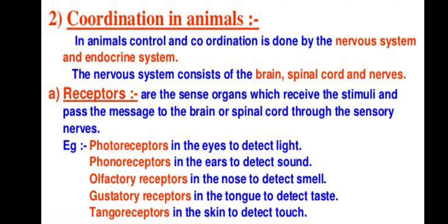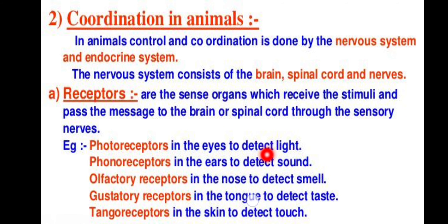Photo means light — so photoreceptors are light receptors, which are obviously located in our eyes. These photoreceptors help us to detect light. Phono means sound — so phonoreceptors are in the ears to detect sound. Olfactory means smell — olfactory receptors are in the nose to detect smell. Gustatory receptors are your taste receptors in the tongue to detect taste. Tango receptors are in the skin to detect touch, and thermoreceptors are also in the skin to help us detect temperature — whether something is hot or cold.